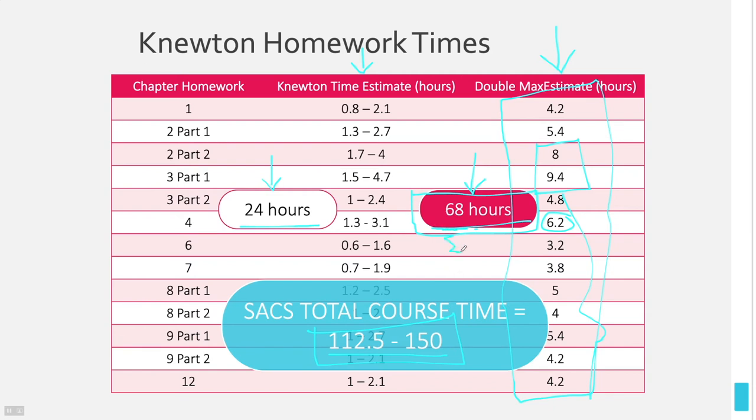And like I said before, these Knewton homework assignments are going to be about half of your course altogether. Students usually spend at least 50% of the time on their homework. So if you're doing 68 hours on average, then you are right in the middle of where SACS tells us we need to be. So this is the perfect amount of required material that we have in order to meet the minimum SACS requirements and in order to keep your degree safe.